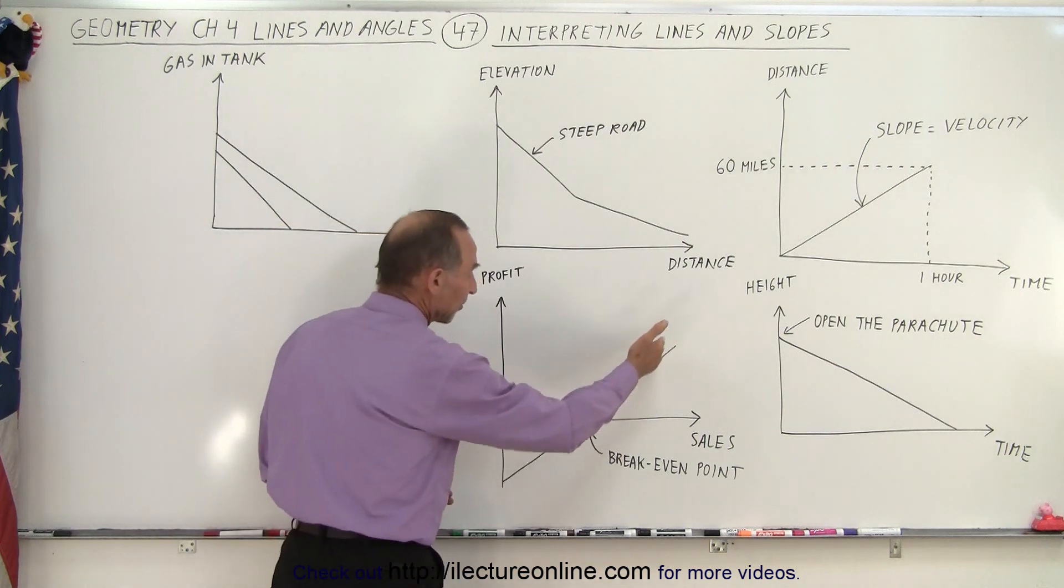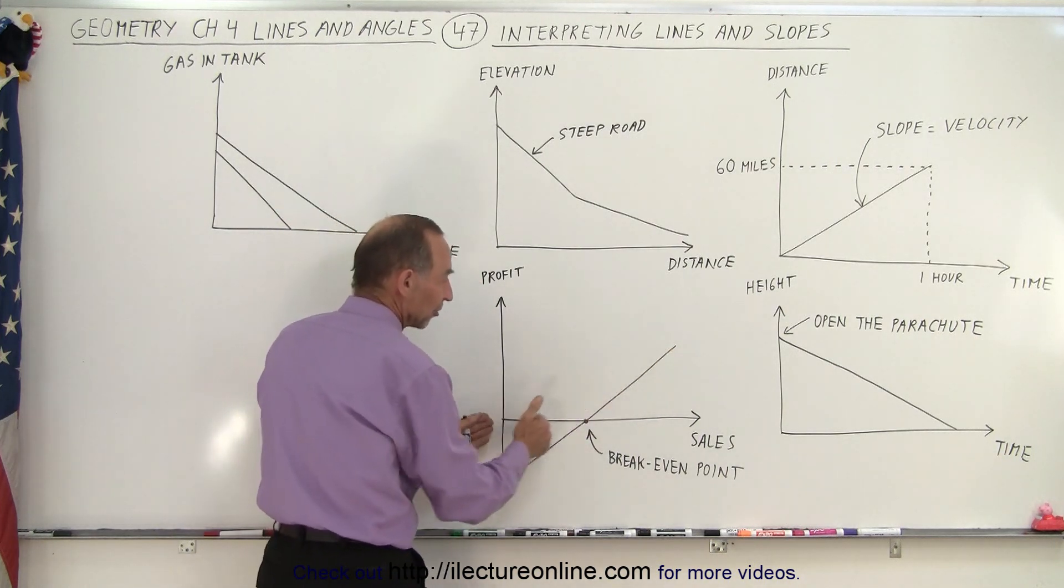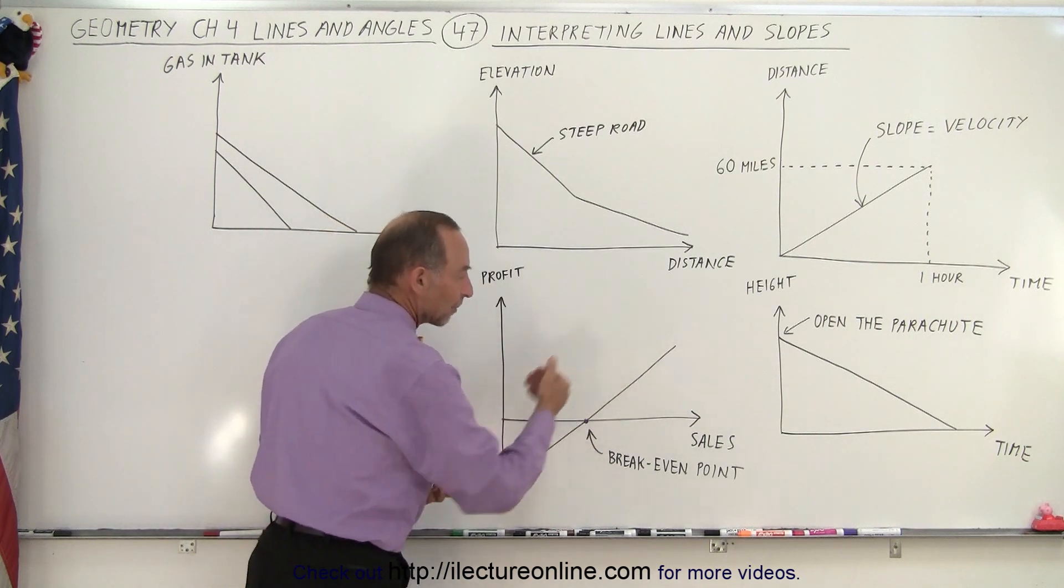So again the line represents essentially what your profit is versus how many sales you have and you want to be above the line as they say. You want to start making profit so you need to have enough sales to make a profit.